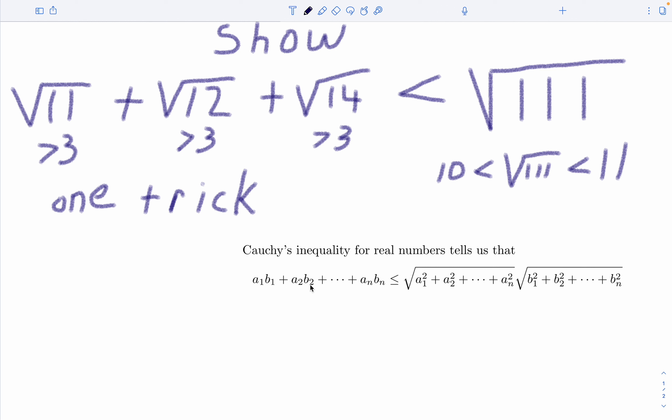And so what we're going to do is just rewrite this piece right here as 1 times root 11. Now again, 1 will be like your a sub 1, b sub 1 will be root 11, and then we'll have plus 1 times root 12, and then 1 times root 14.